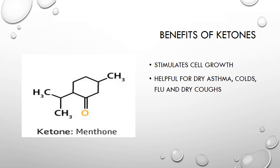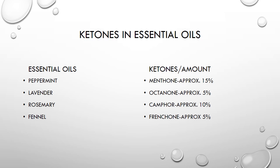The third oxygenated compound is ketones. Benefits of ketones include: stimulates cell growth, helps with dry asthma, colds, flu, and dry coughs. This is an example of a ketone found in an essential oil — you see the double-bonded oxygen bonded to a carbon, which makes it an oxygenated compound. Some essential oils containing ketones include peppermint, lavender, rosemary, and fennel, with their respective ketones and percentages shown.